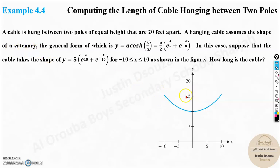Catenary means whenever you hang a cable, the shape that is formed is called catenary. The general form is given by the equation y equals a cosh(x/a), which can be written as this as well. In this case, suppose that the cable takes the shape of y equals 5 times e^(x/10) plus e^(-x/10) for -10 ≤ x ≤ 10 as shown in the figure.